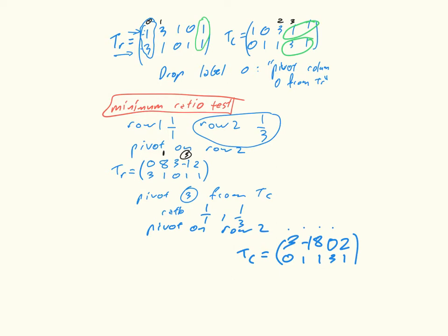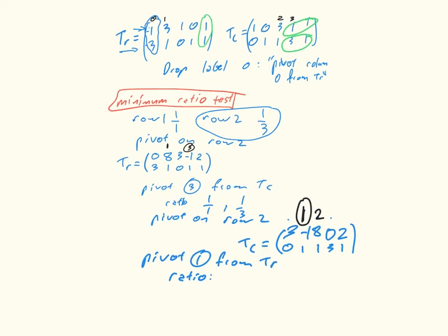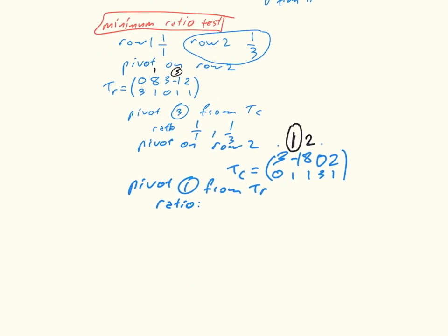So again, we can check. Do we have a fully labeled vertex pair? No, at the moment we have 1, 2, and 3 as our labels. But we have just picked up 1. So we need to pivot 1 from Tr. We look at the ratios. And so now I'm just looking at 2 over 8, which is 1 quarter, and 1 over 1. So I'm going to pivot on row 1.